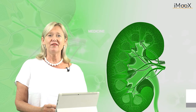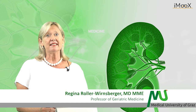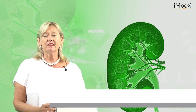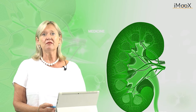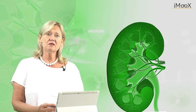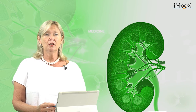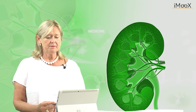Physiological ageing of the kidney is complex. It is estimated that the kidney volume in an 80-year-old man or woman is reduced from 300 grams to just 200 grams per kidney.